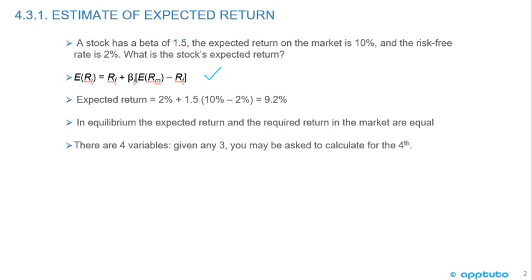So a stock has a beta of 1.5, the expected return on the market is 10%, and the risk-free rate is 2%. What is the stock's expected return? Using the formula: 2% plus 1.5 times (10% minus 2%), which gives us 9.2%.